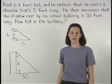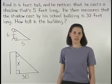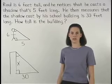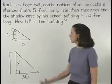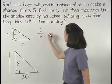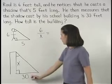And remember that if two triangles are similar, then the lengths of the corresponding sides are in proportion. So we can set up the proportion 6 is to X as 5 is to 30.